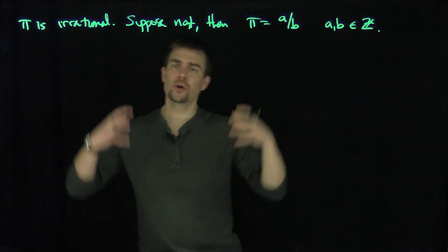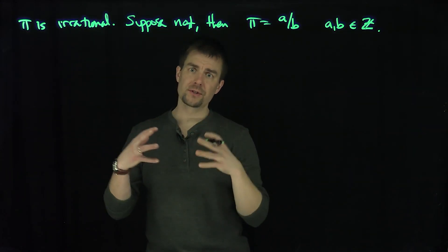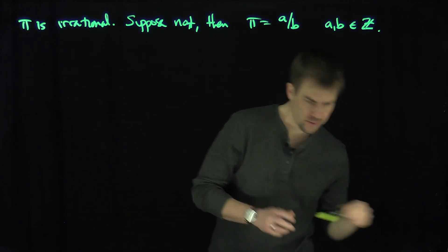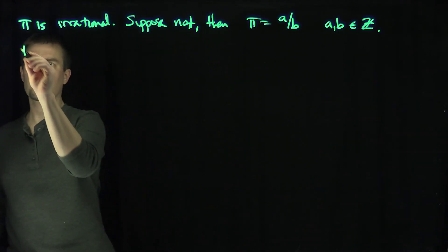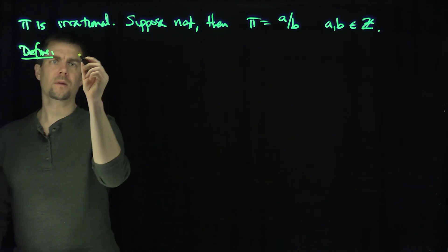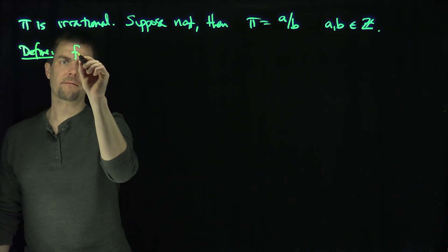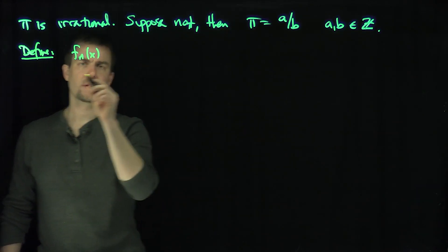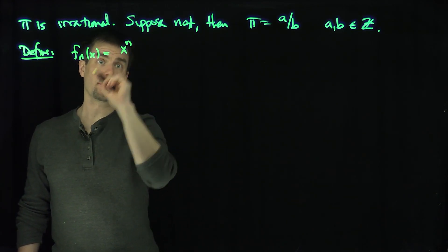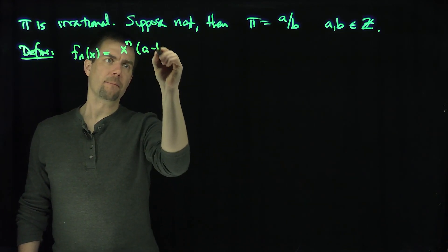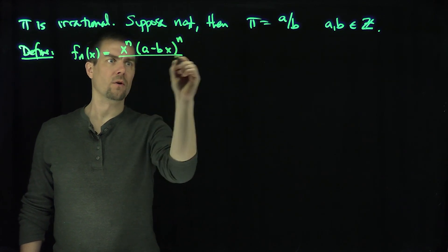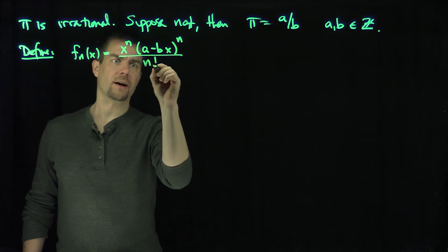Now, the idea is to construct a function which is going to zero very, very fast. What we're going to do is we're going to define a function f_n of x, and f_n of x is going to be x to the power n, and then a minus bx to the power n over n factorial.